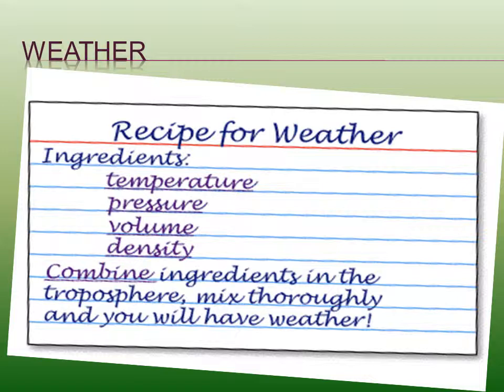Air pressure is the force exerted by the weight of tiny particles of air molecules, with the unit PSI — pounds per square inch. Volume is the space occupied by an object or material, with units of cubic feet or cubic meters. Air density is the mass per volume of the Earth's atmosphere.